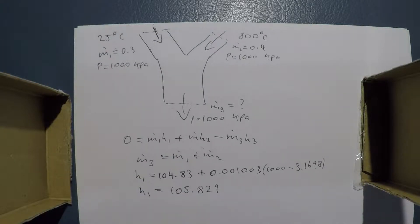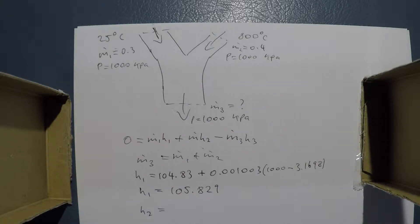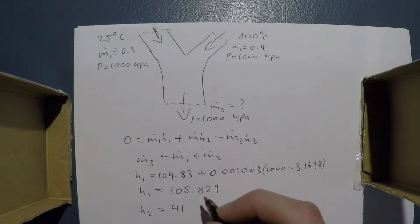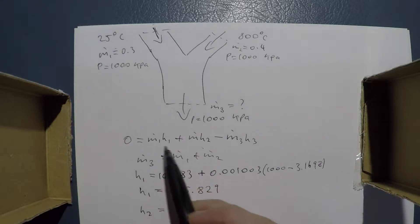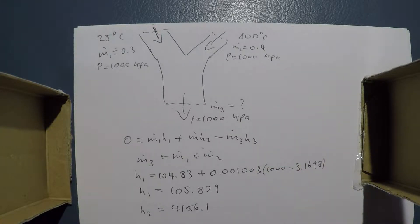H2 from stream 2 is at 1,000 kilopascals and 800 degrees. We know it's a superheated vapor. Going to the 1,000 kilopascals superheated water table and finding 800 degrees, we can see that H2 equals 4156.1 kJ/kg. From that, we can substitute everything in, leaving H3, which is what we want.